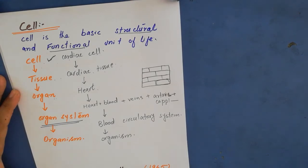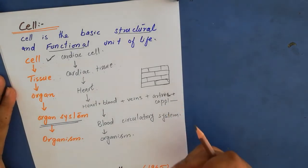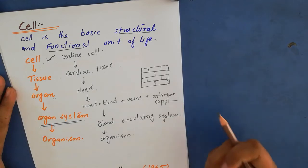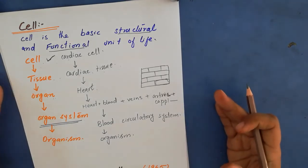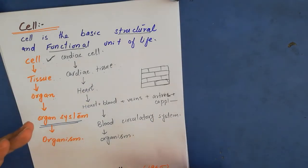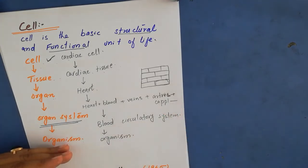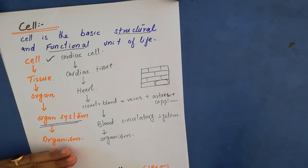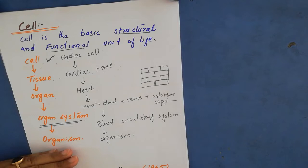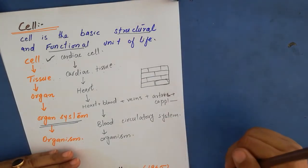Before the discovery of the cell, there was no compound microscope. Every scientific discovery is related to advances in technology. Before the compound microscope, scientists had the simple microscope, which was not able to show the cell. The major difference between simple and compound microscope is that the simple microscope has only one lens while the compound microscope has more than one lens.